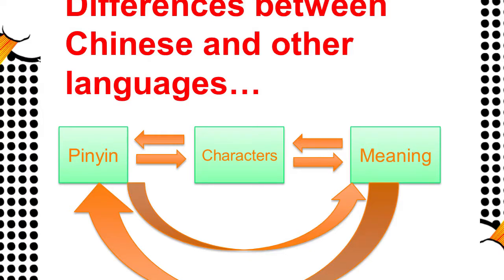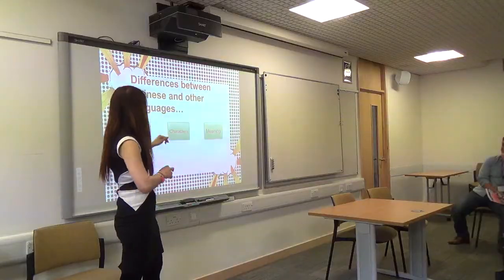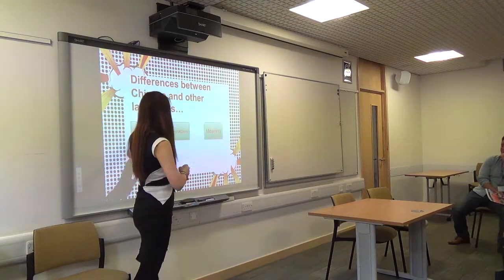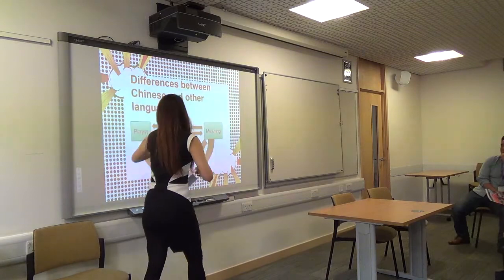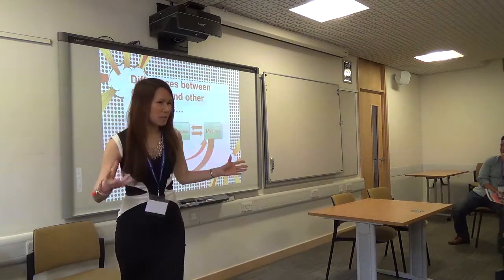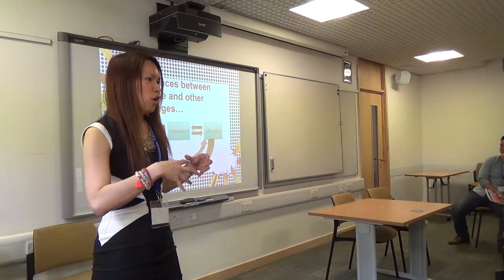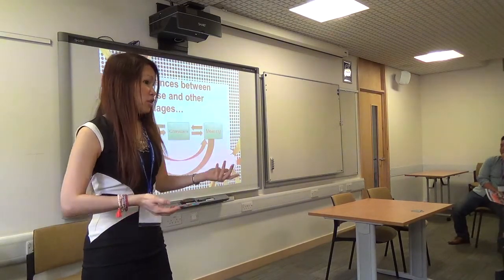The biggest difference between Chinese and other languages is that we have pinyin, we have characters, and we have meaning. When you only have sound and meaning, it's basically a two-way road. But when you also have characters, that means you actually have six different ways of testing people — character with pinyin, character with meaning, meaning with pinyin, pinyin with character, and so on. I think that's the biggest challenge people face at the very beginning when you introduce the characters.